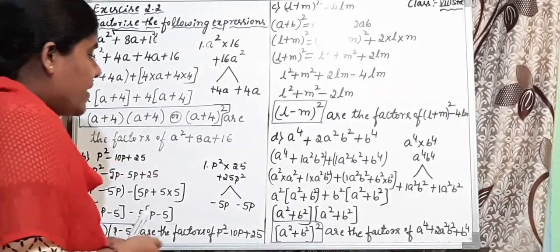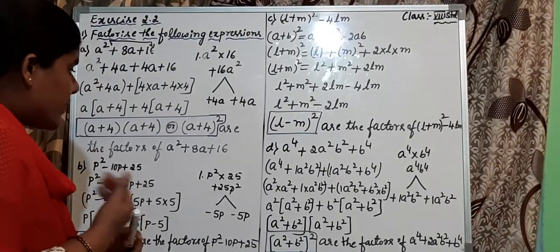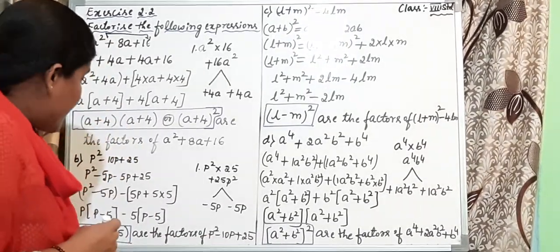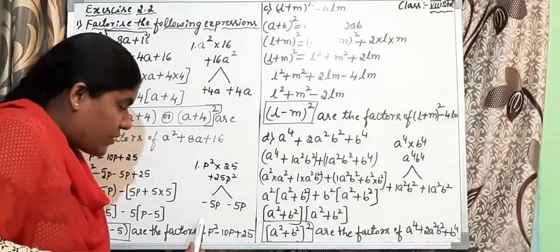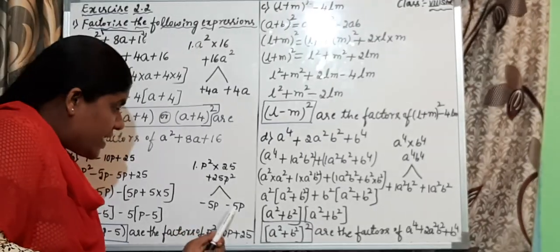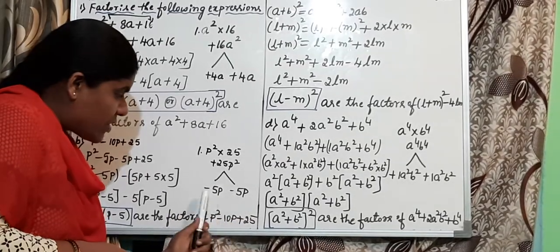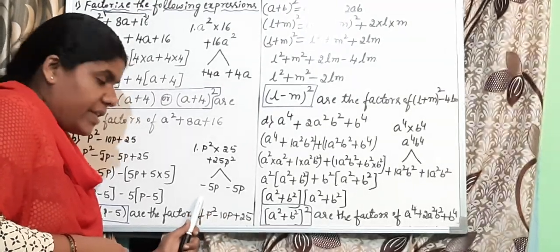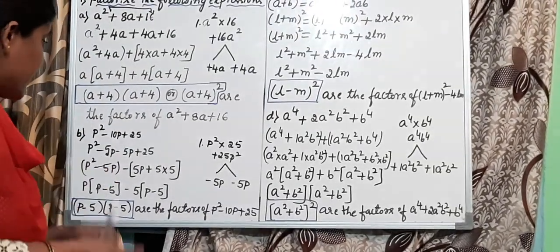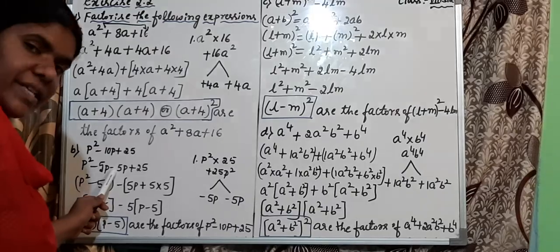Next, select suitable multiplicative factors. The middle term is minus 10p. Since 5 fives are 25, I assign signs carefully — as the middle term is negative, both factors are taken as negative: minus 5p and minus 5p. Minus into minus is plus, 5 fives are 25, p into p is p². Adding these two numbers: minus 5 plus minus 5 is minus 10, so minus 10p is obtained — the middle term is confirmed. Rewrite: p² minus 5p minus 5p plus 25.